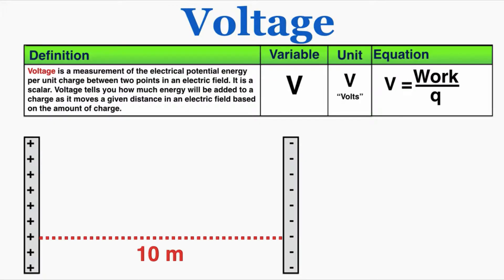The variable is capital V and the unit is also V for volts. The equation is V equals work divided by charge.